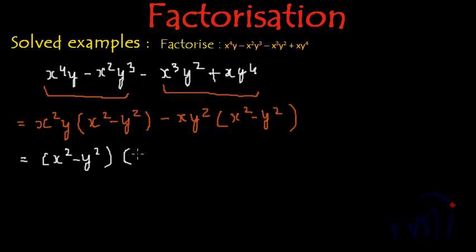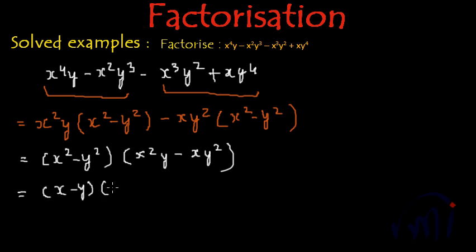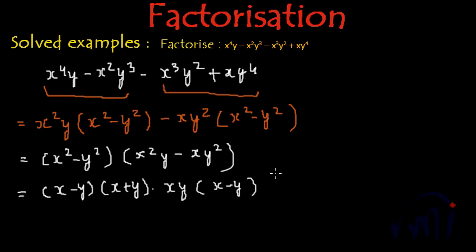Inside the bracket we will have x squared y minus xy squared. This x squared minus y squared can be written as x minus y multiplied by x plus y. And from these two terms again we can take xy common, and inside the bracket we will have x minus y. So these are the factors of the expression.